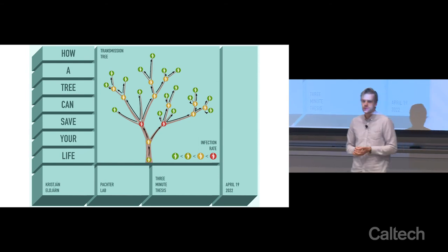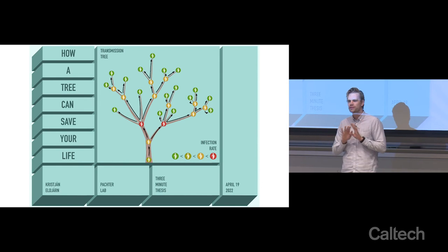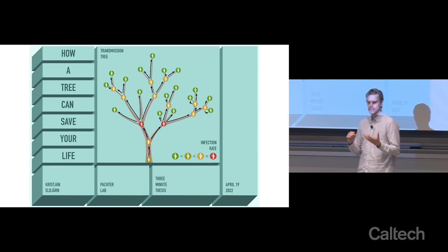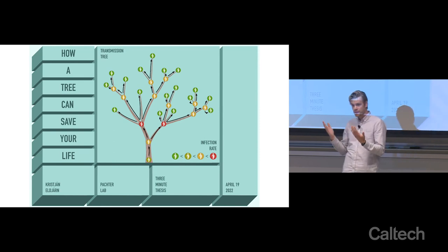And this isn't news to us. We know that quarantine works. We've been doing it for thousands of years. But it is incredibly difficult to quantify exactly how effective quarantine is because that requires data on the individual level, like we have in the transmission tree, rather than some summary statistic about the whole, which is what we usually have.